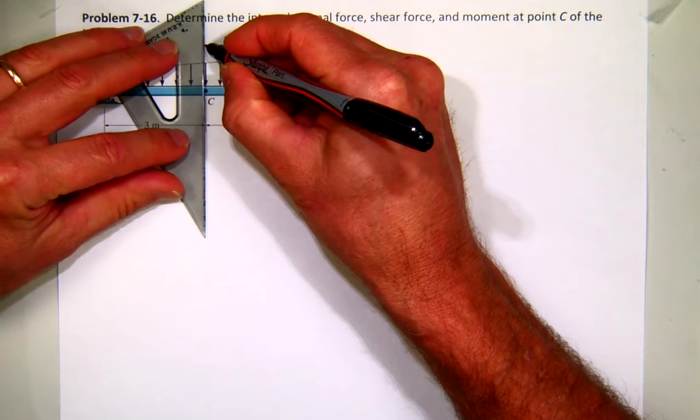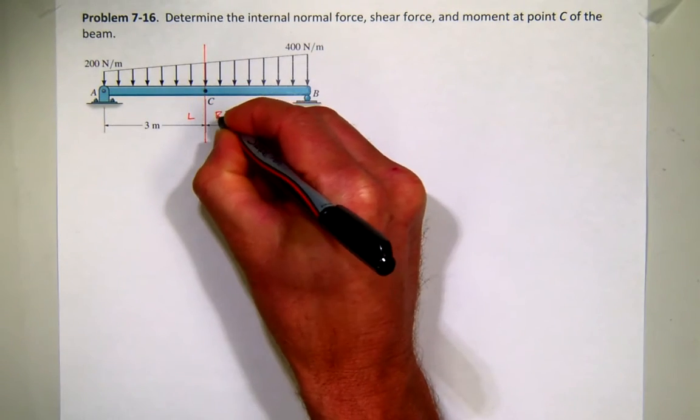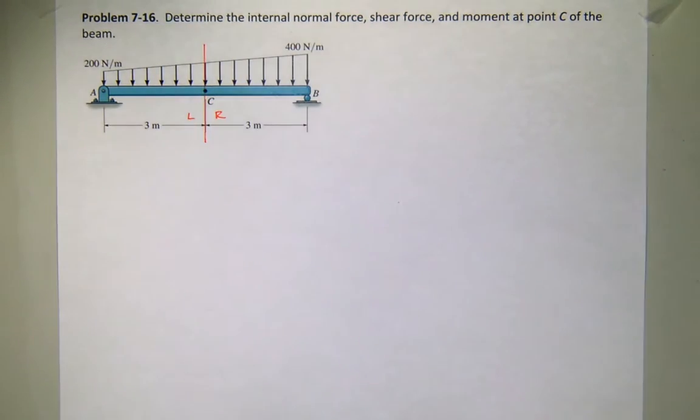But you can see if you cut the structure at C and look at the left or the right side, there's no clear advantage.